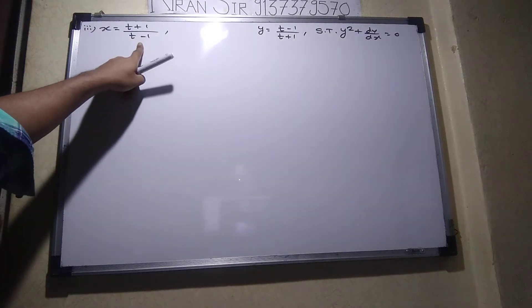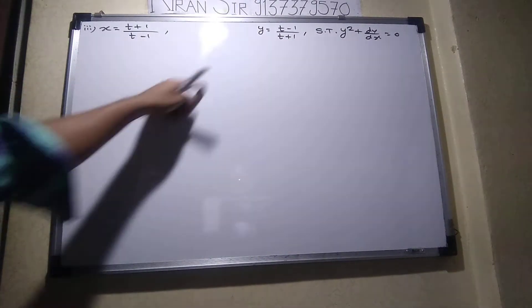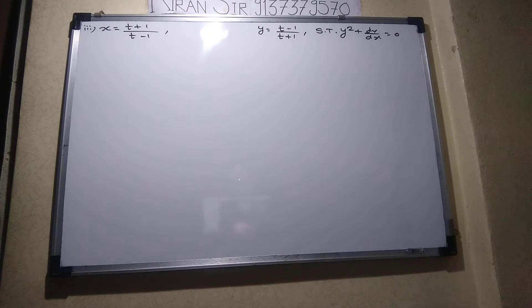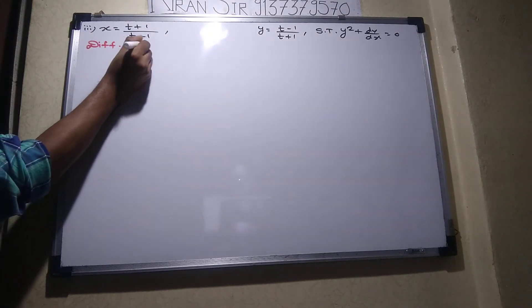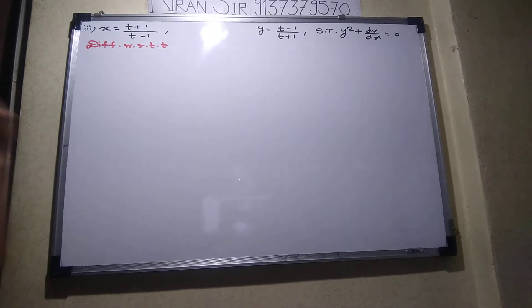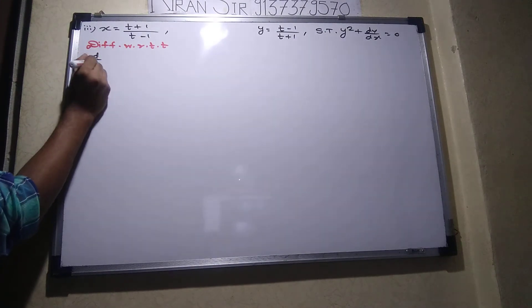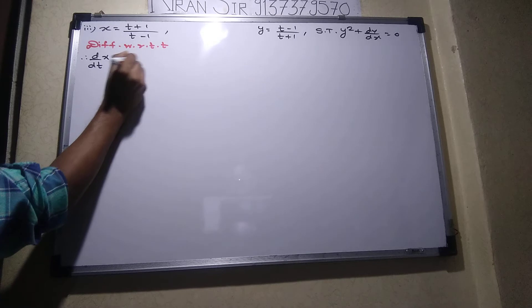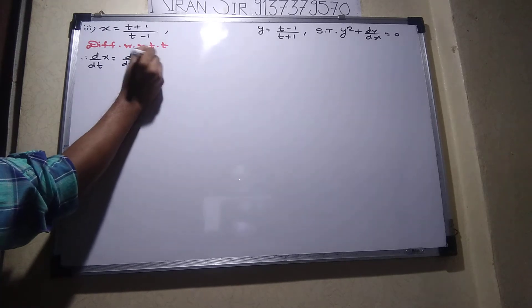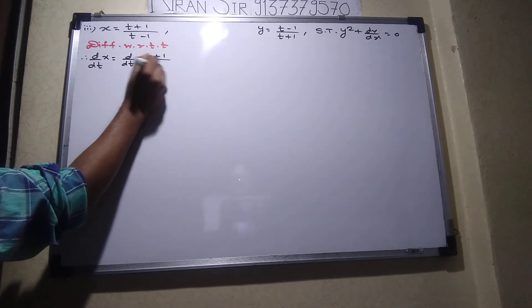So x is the function of t, y is the function of t. What is the common function t, what is the parameter t? Then differentiate with respect to t. Let's start the function of t: d by dt of x, d by dt of t plus 1 upon t minus 1.